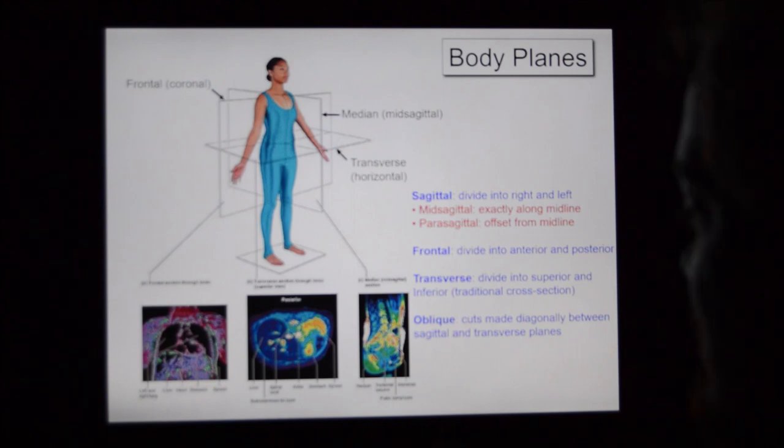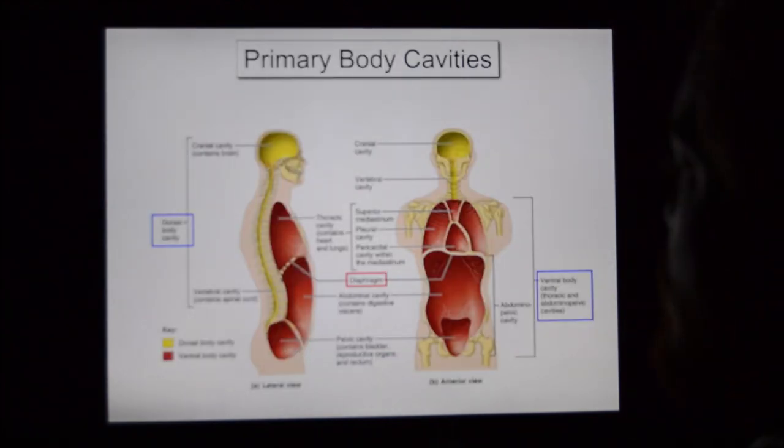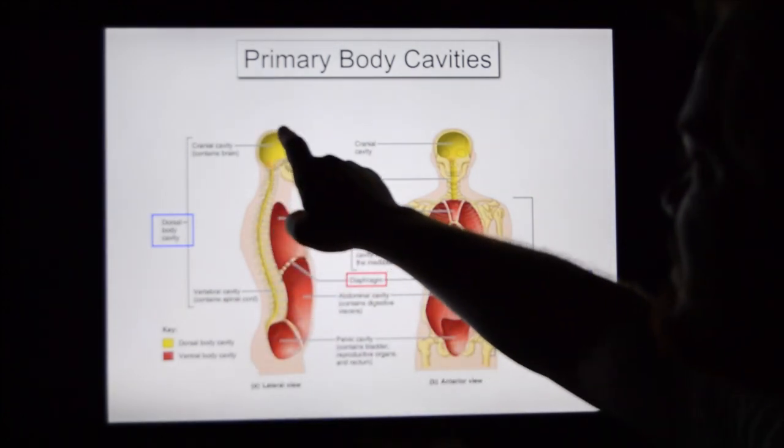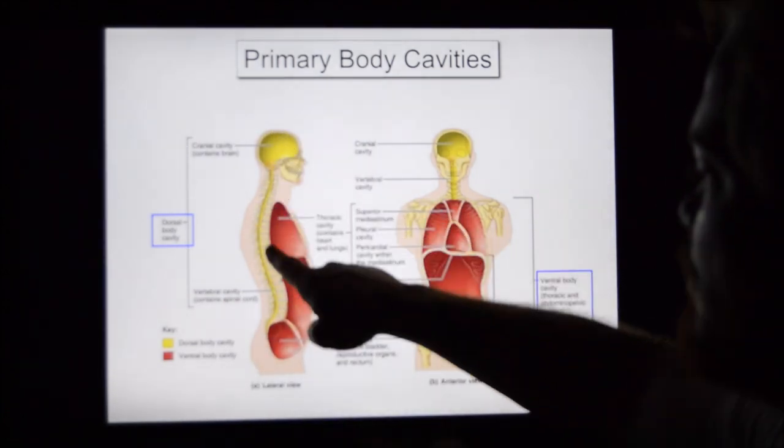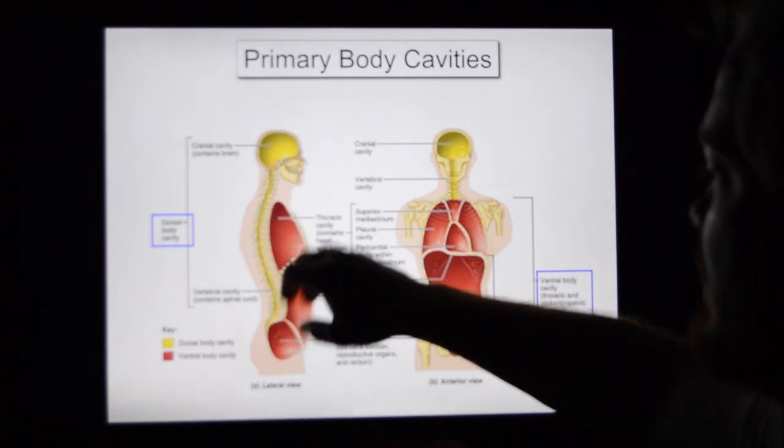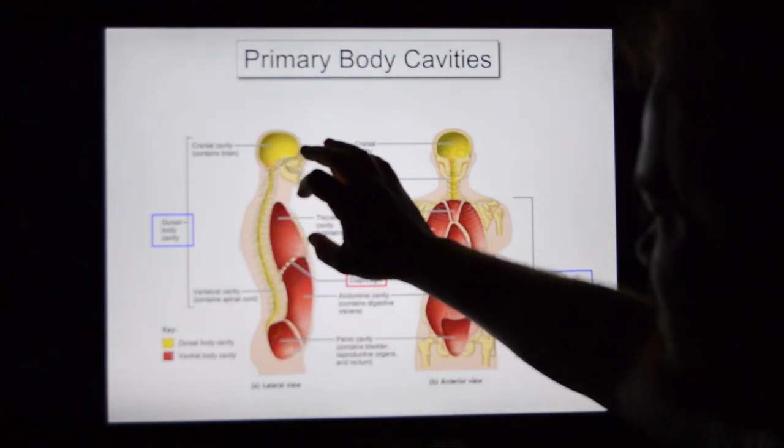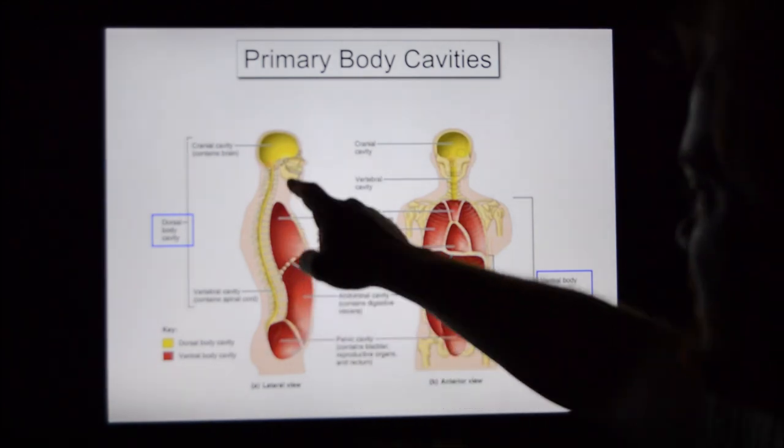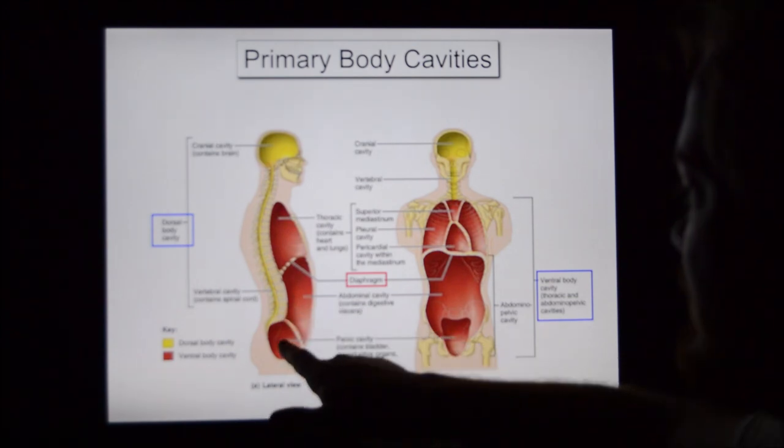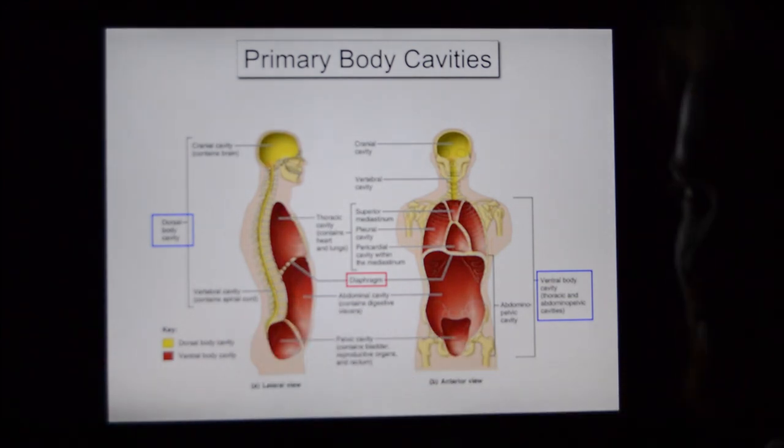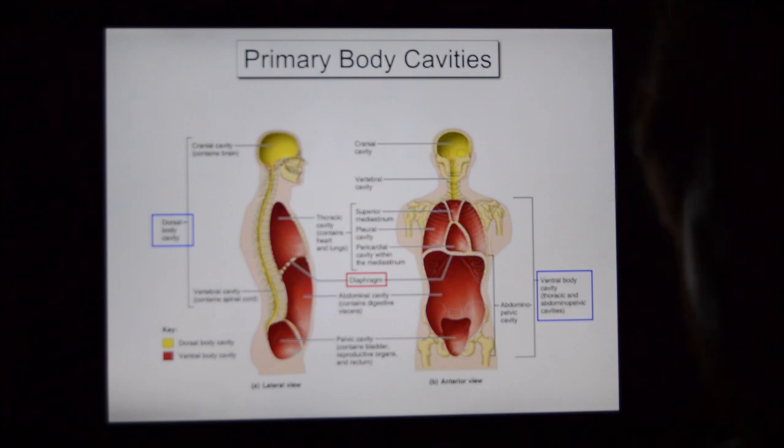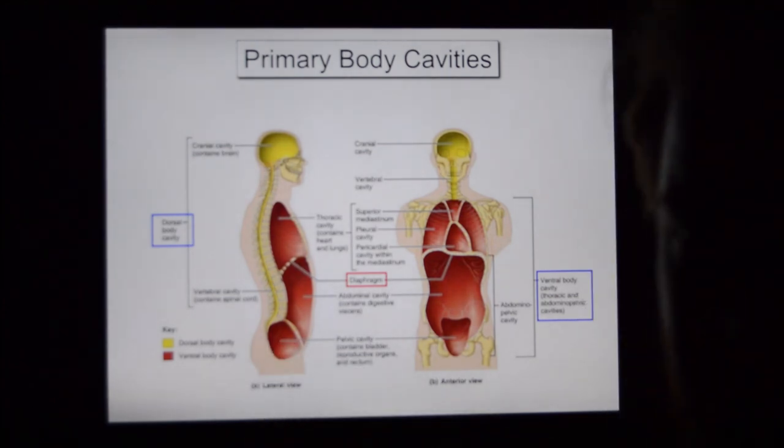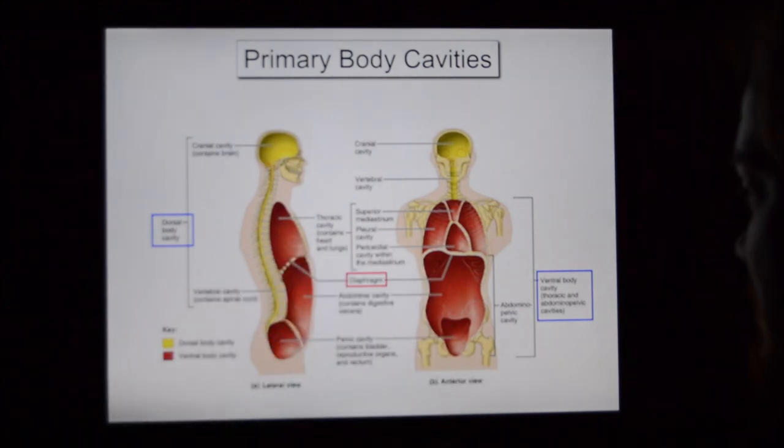Body cavities: this is very important for us. We have a cranial cavity which houses the brain, a vertebral cavity which houses the spinal cord, a thoracic cavity which houses the lungs and the heart. We have a diaphragm here made out of skeletal muscle which divides the top from the bottom. There's an abdominal cavity housing things like the liver, the stomach, the intestines, and a pelvic cavity housing reproductive organs kind of capped off by the bladder.